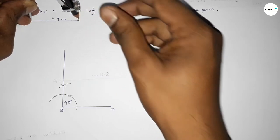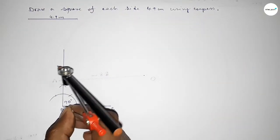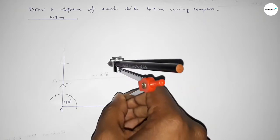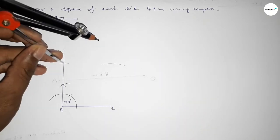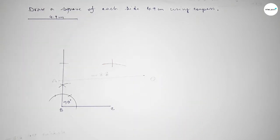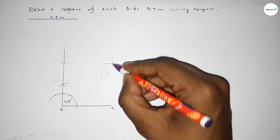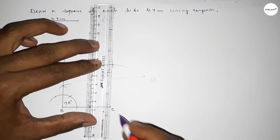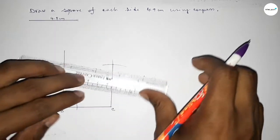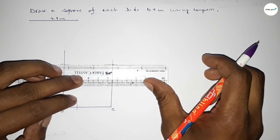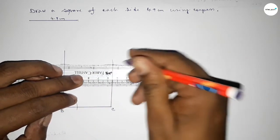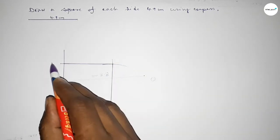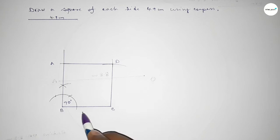Now taking the length 4.9 centimeters using the compass, putting the compass on point B and cutting here. With the same length, cutting here again so both curves intersect at a point. Now joining this side and then joining this side to get the square of each side 4.9 centimeters.